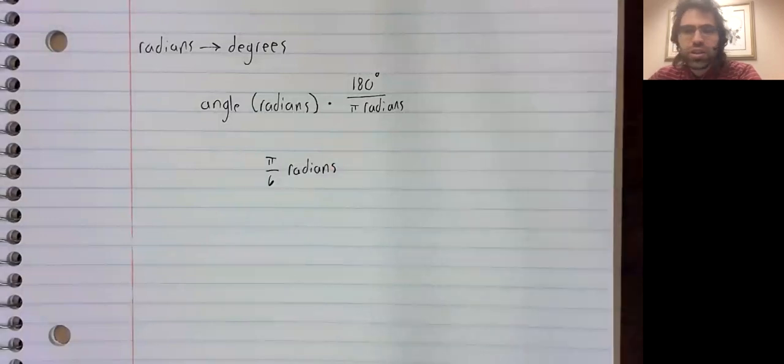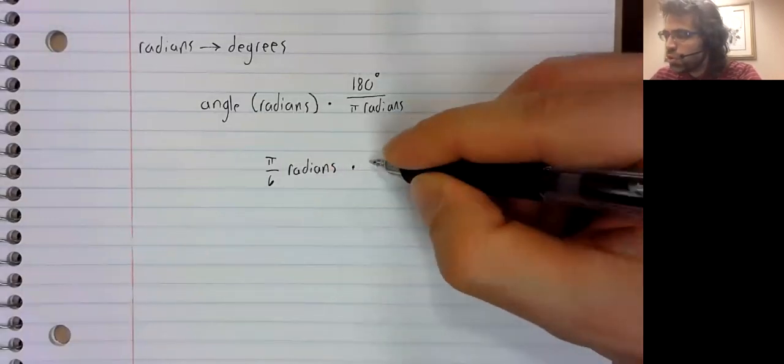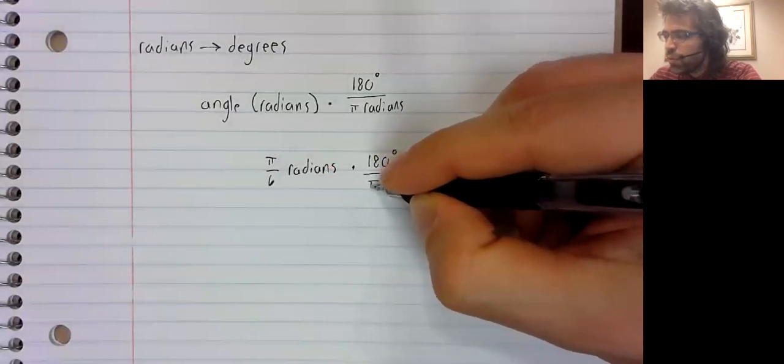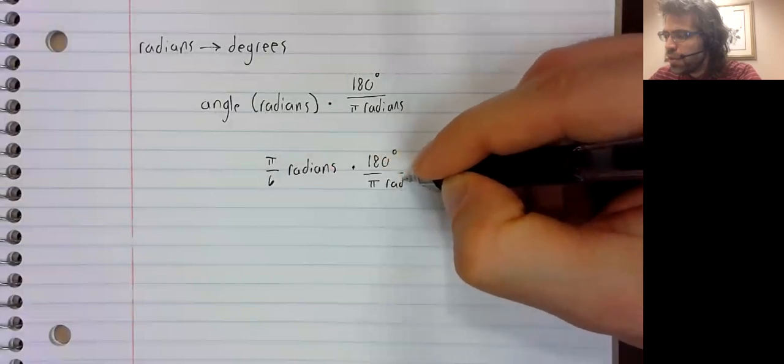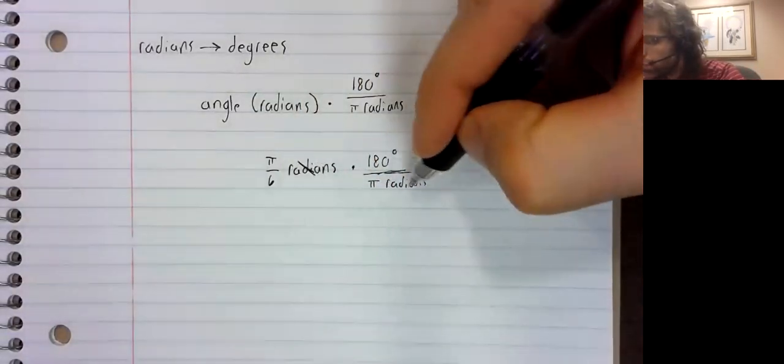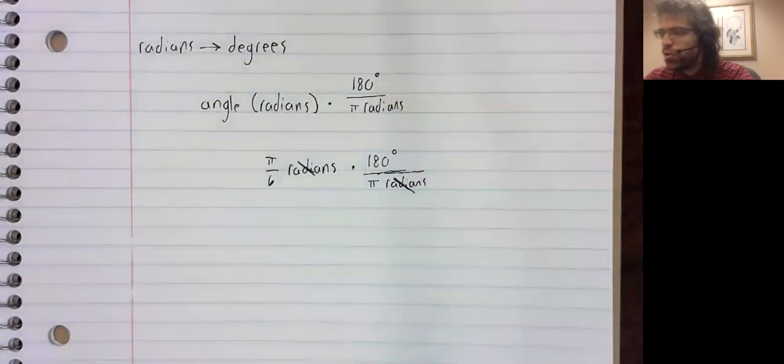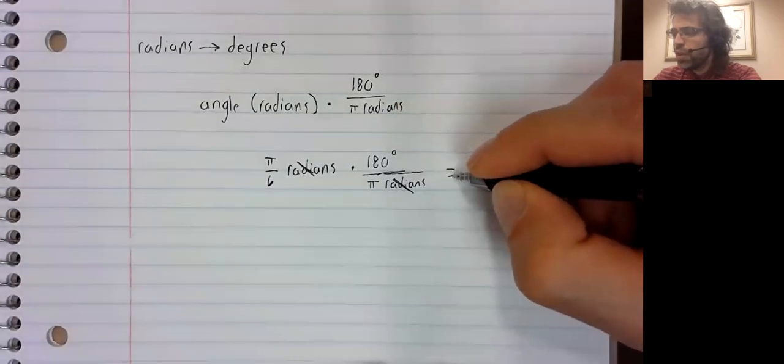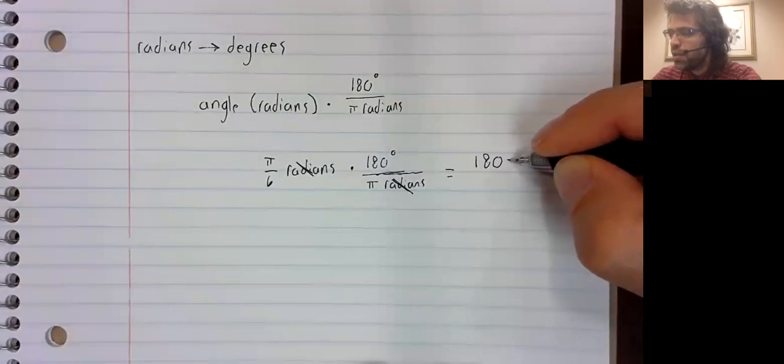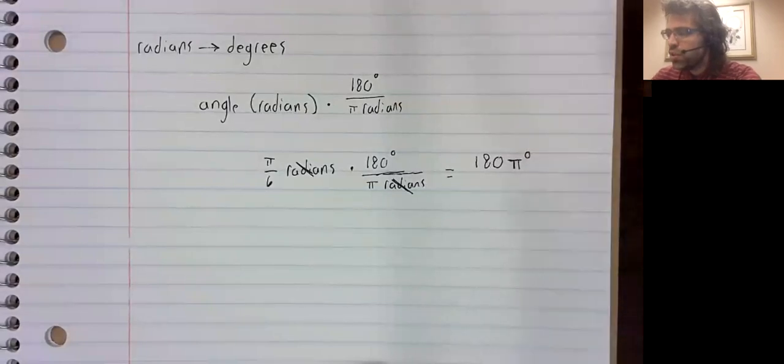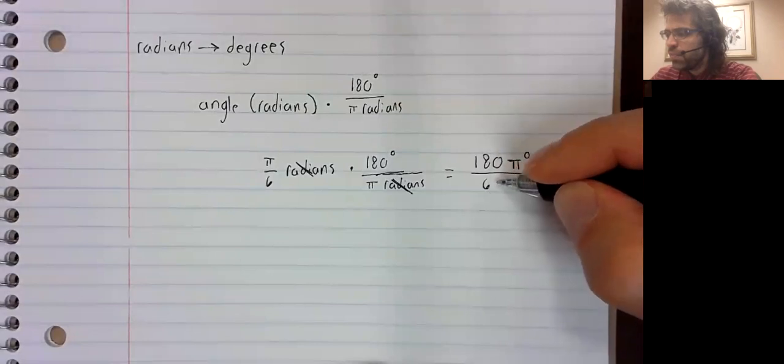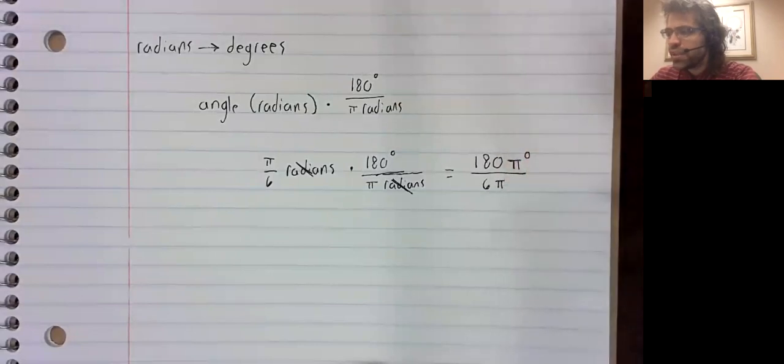To convert this into degrees, you should multiply by 180 degrees over pi radians. You know you're doing this right if your units cancel. And we wind up with 180 pi degrees in the numerator, all divided by 6 pi.